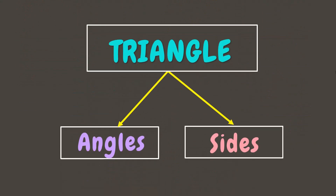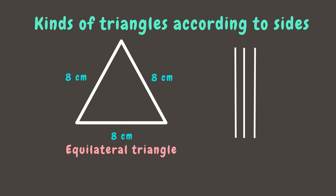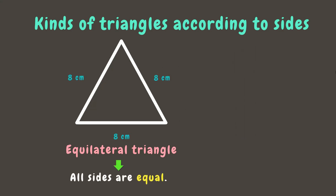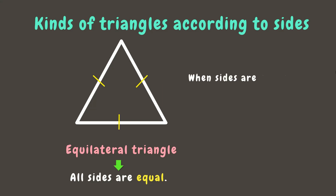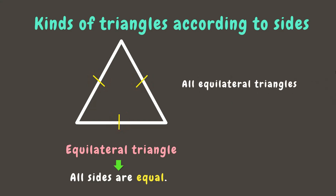Now we are done with kinds of triangles according to its angles. Let's learn about kinds of triangles according to its sides. First, we have an equilateral triangle. In an equilateral triangle, all sides have the same length or are equal. If one side measures 20 meters, this means the remaining sides will always be 20 meters too. We also use tick mark symbols to determine whether sides are equal — when sides are marked using the same symbol, they have equal measures. Always remember that all equilateral triangles are also equiangular triangles.